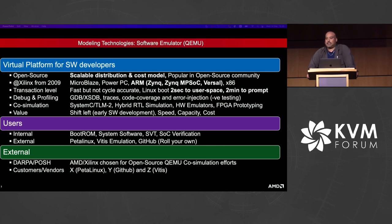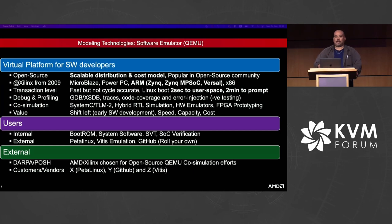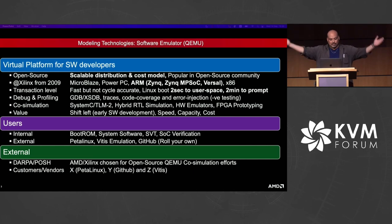We also distribute QEMU in our customer-facing tools — it's part of PetaLinux and part of Vitis, where it goes under the name hardware emulation. We also distribute it on GitHub for people who want to roll their own solutions. Plenty of partners take our QEMU and co-simulation framework, package it up, and sell it to other customers — including back to Xilinx, which is fun.